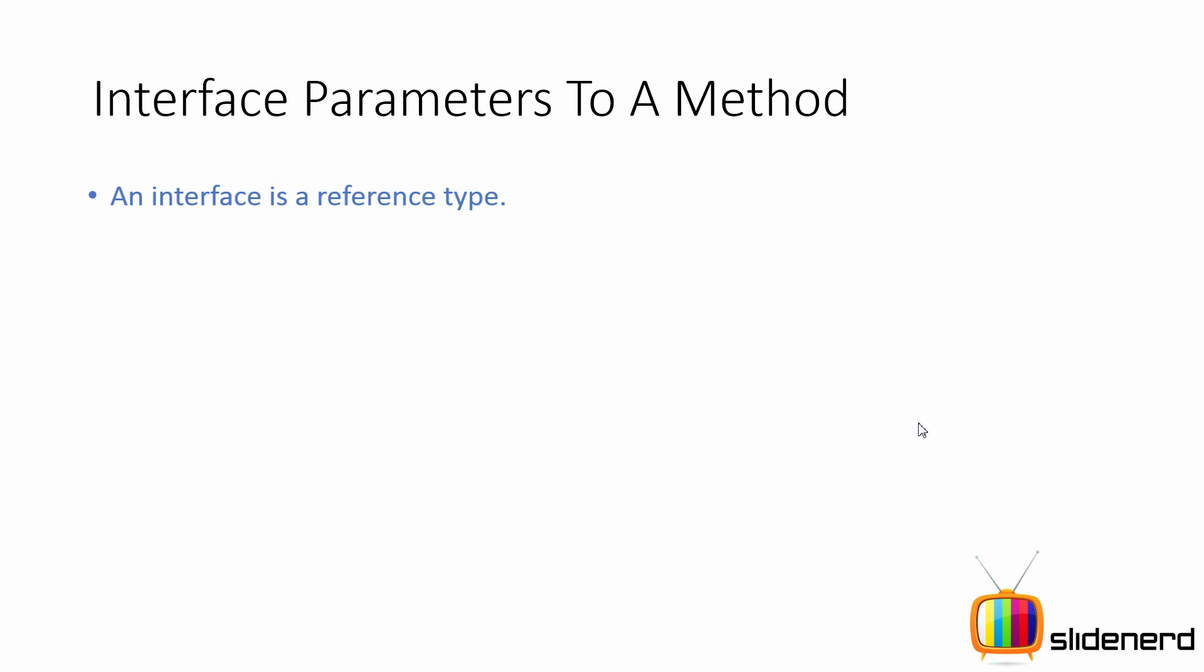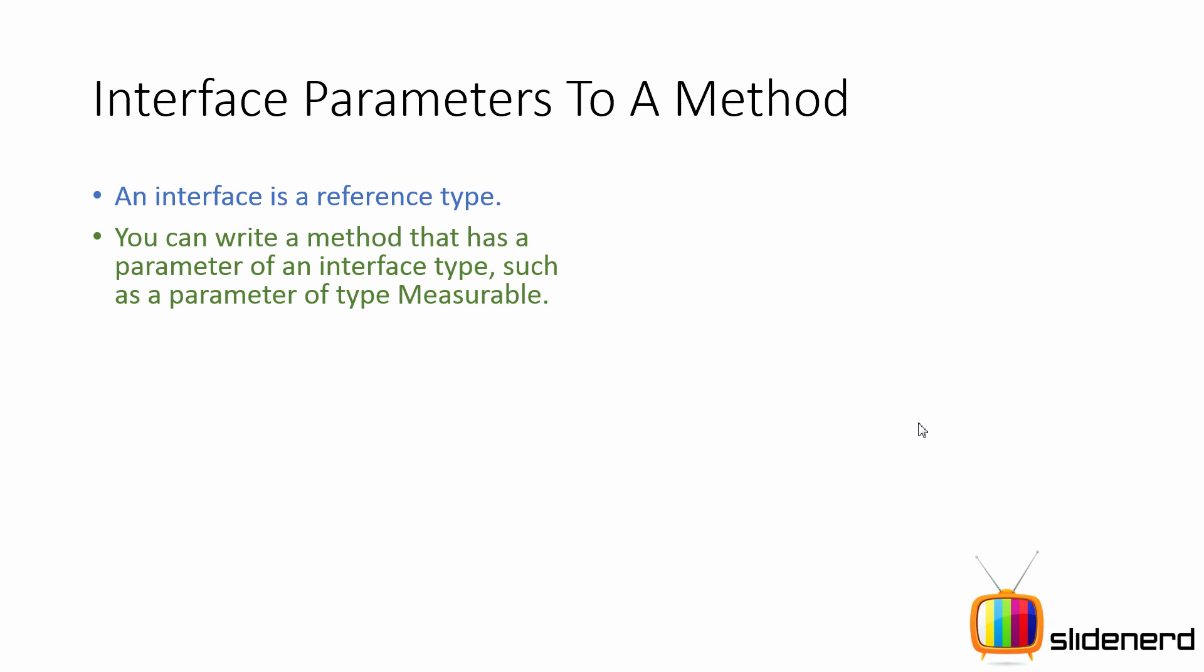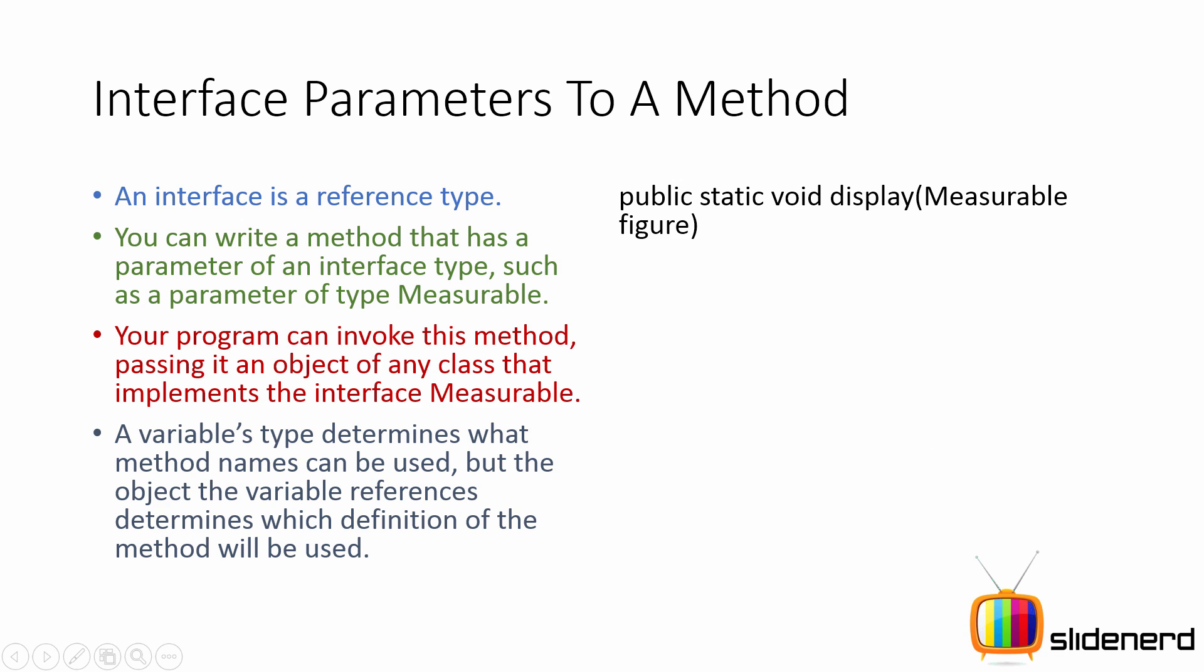An interface is a reference type. You can write a method that can take a parameter which is of type interface and you can work things out inside the method using that parameter. Now let me show you exactly how that looks like. Here we have our public static void display method that takes this variable measurable figure.